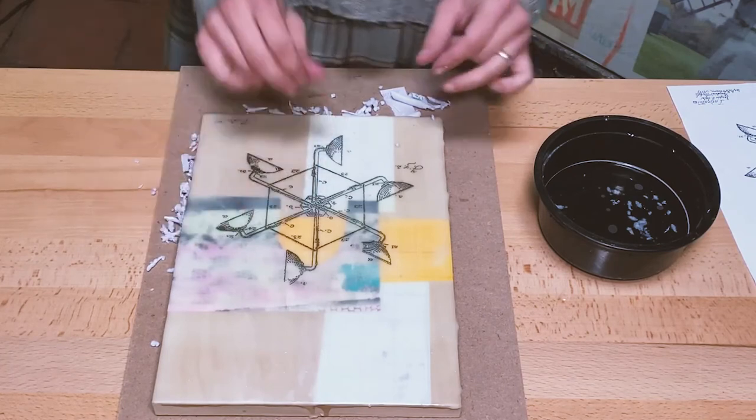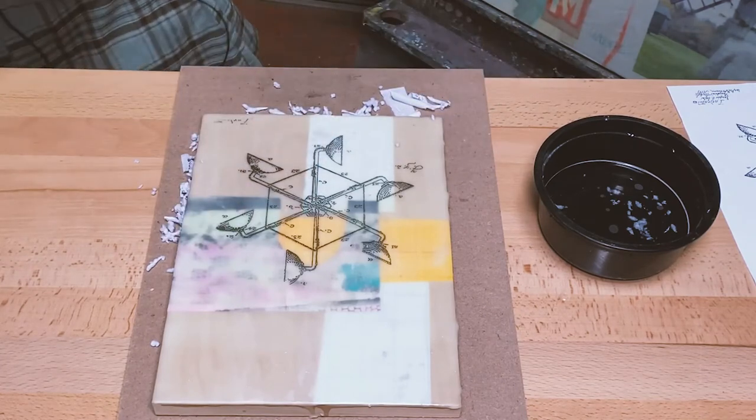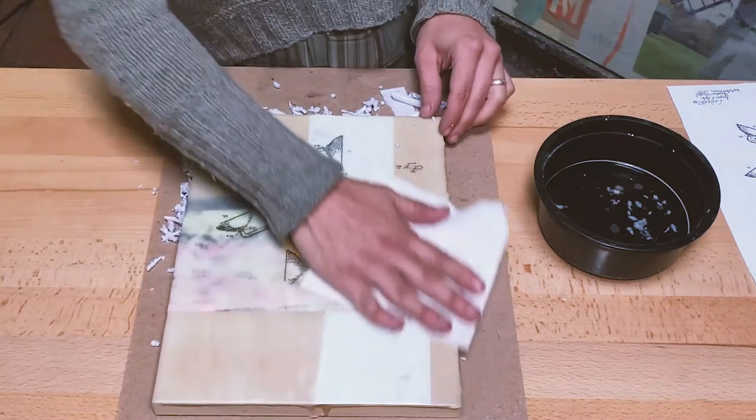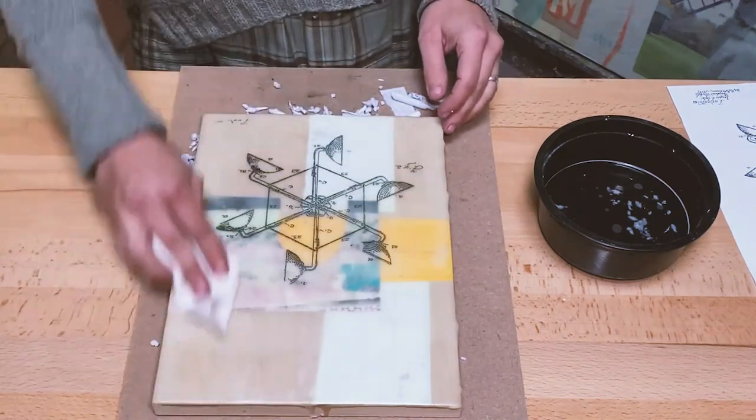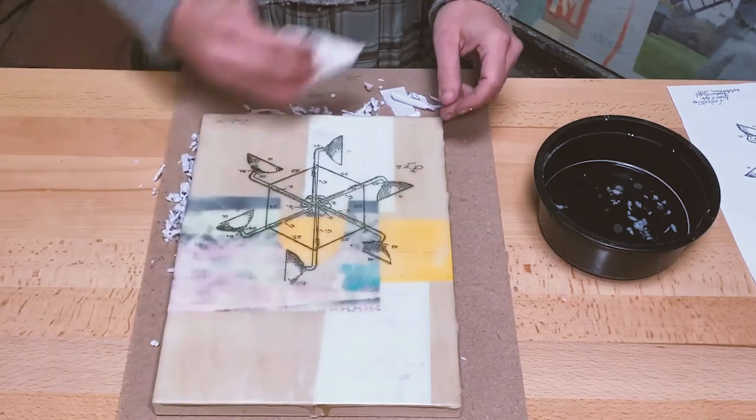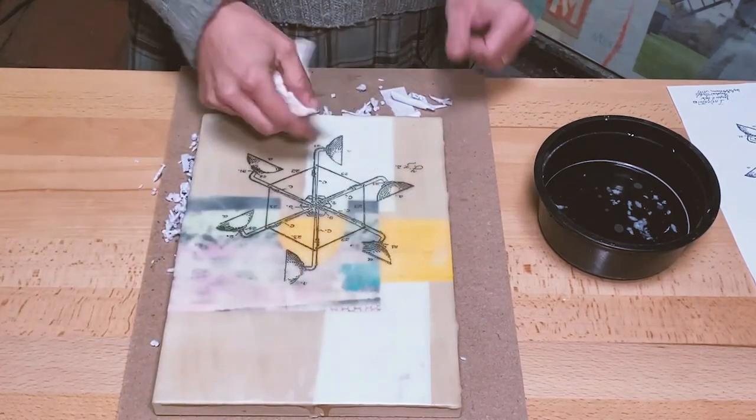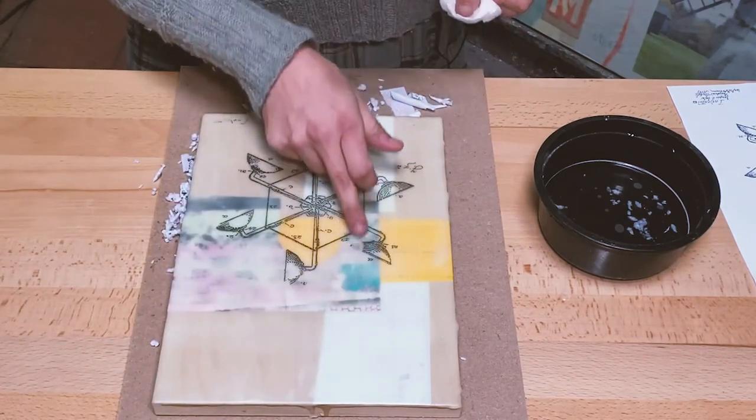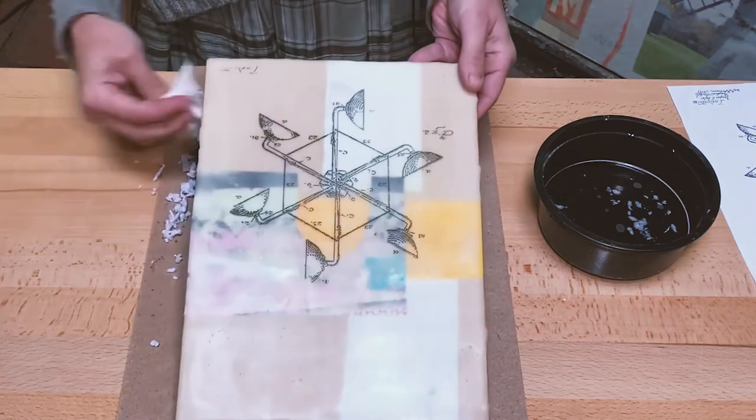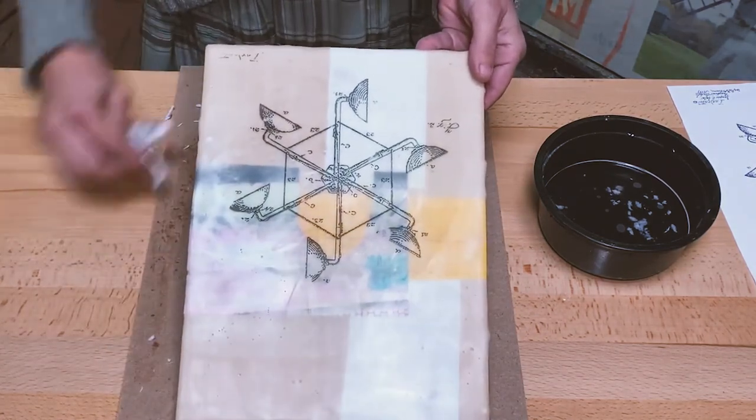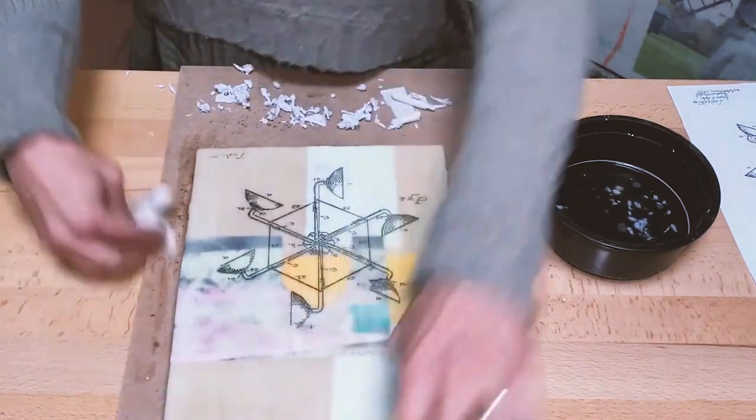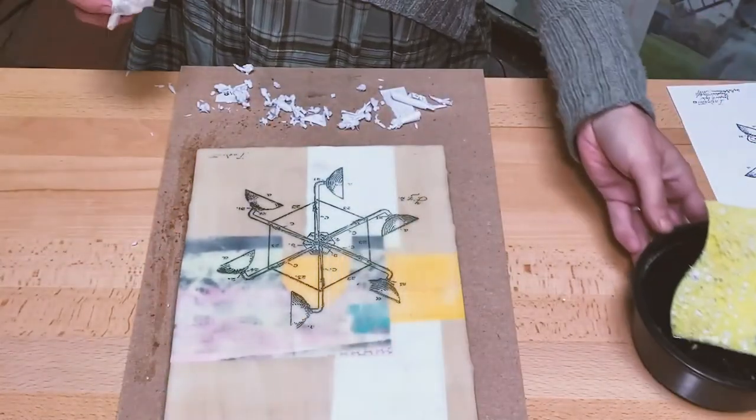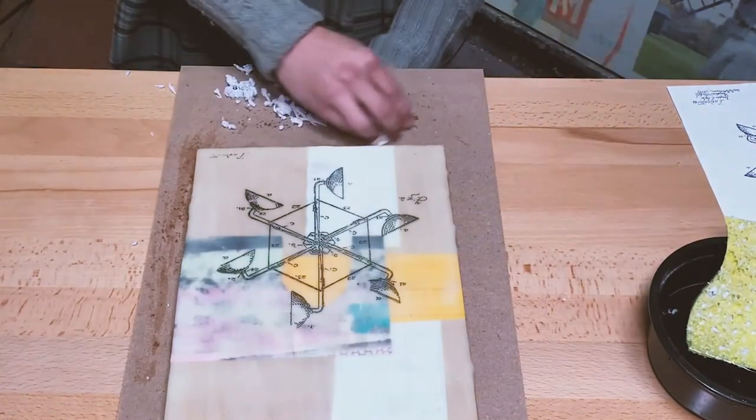Alright, so I'm just going to dry this very gently with a paper towel. And now that it's dry, you can see there's a little bit of some milky paper texture, but like I said, that's all going to get just melted down into the plastic.